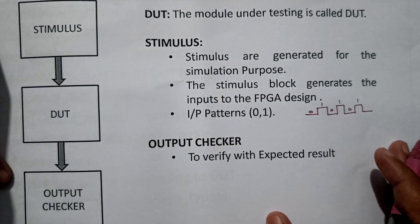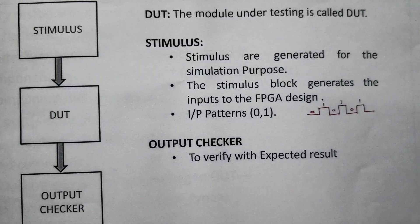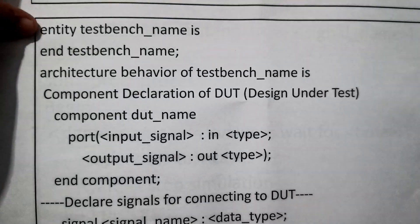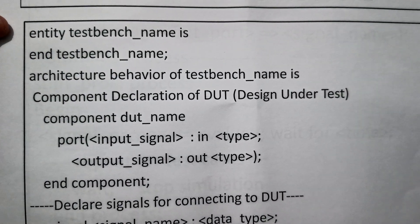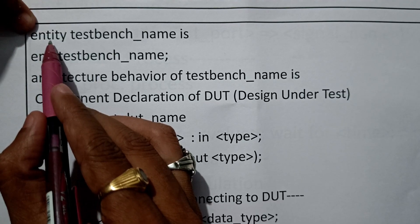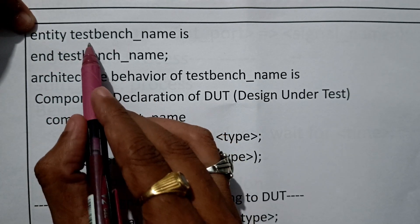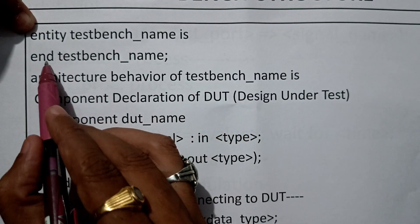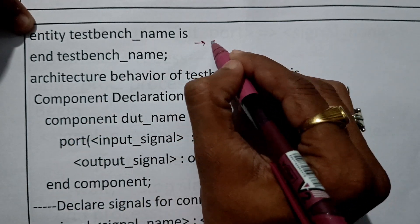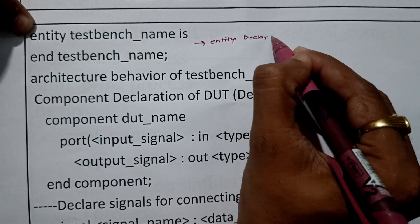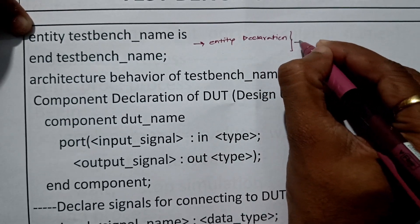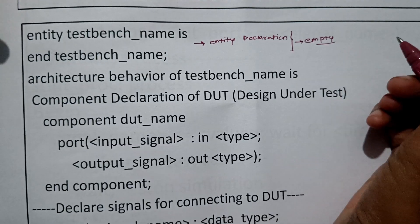So Stimulus, DUT, and Output Checker — this is the way by which our test bench can be built. Now let us talk about the syntax and standard form. When we start, obviously we begin with the library declaration, followed by the entity. The entity for the test bench will be named — for example, 'test_bench_name' — and it ends with 'end test_bench_name'. This is the entity declaration for the test bench. An important point: the entity of a test bench will be empty — it has no input or output ports defined.